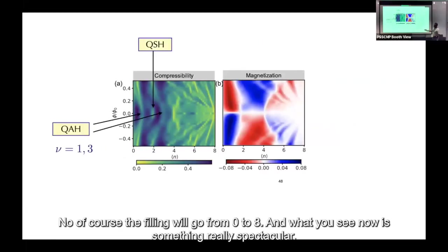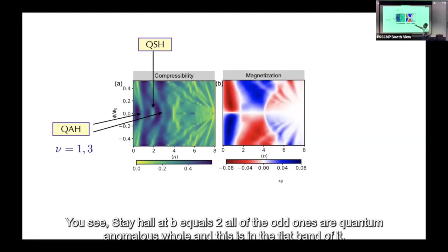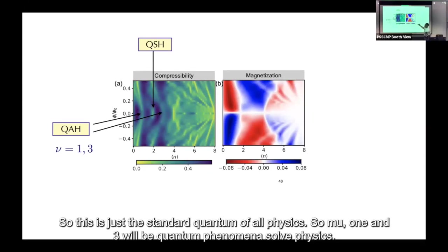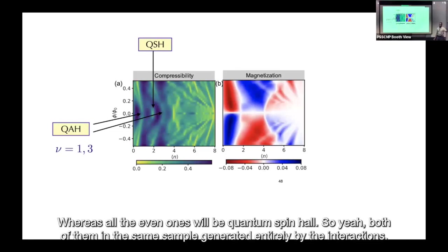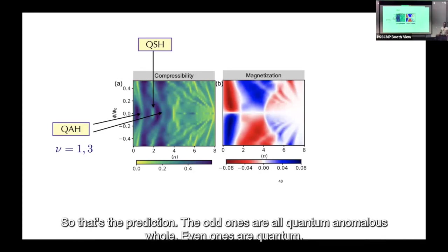Peng did the calculation. The filling now goes from zero to eight. What you see is quite spectacular: quantum anomalous Hall at ν=1, quantum spin Hall at ν=2. All odd fillings are quantum anomalous Hall; all even fillings are quantum spin Hall. Both in the same sample, generated entirely by the interactions. That's the prediction.